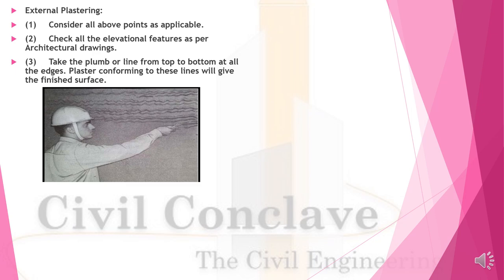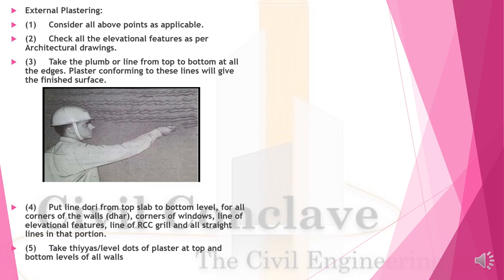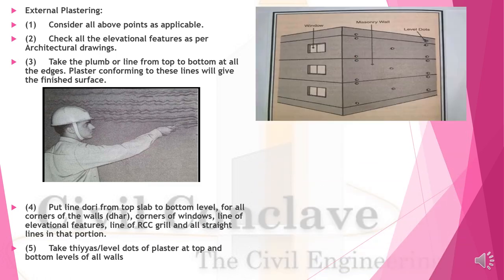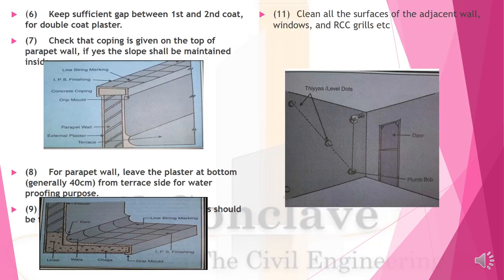External plastering: Consider all applicable internal plastering points. Check all elevation features as per architectural drawing. Take a plumb line from top to bottom of all edges; plastering conforming these lines will give the finished surface. Put a line-degree from the top slab to the bottom level for all corners, corners of windows, lines, and elevation features. Take tia level dots at top and bottom levels. Ensure sufficient gap is kept between the first and second coat. Check that coping is provided at the top of the parapet wall. For parapet wall, leave the plaster at bottom generally for 40cm. Clean all surfaces of adjacent walls and RCC grills.